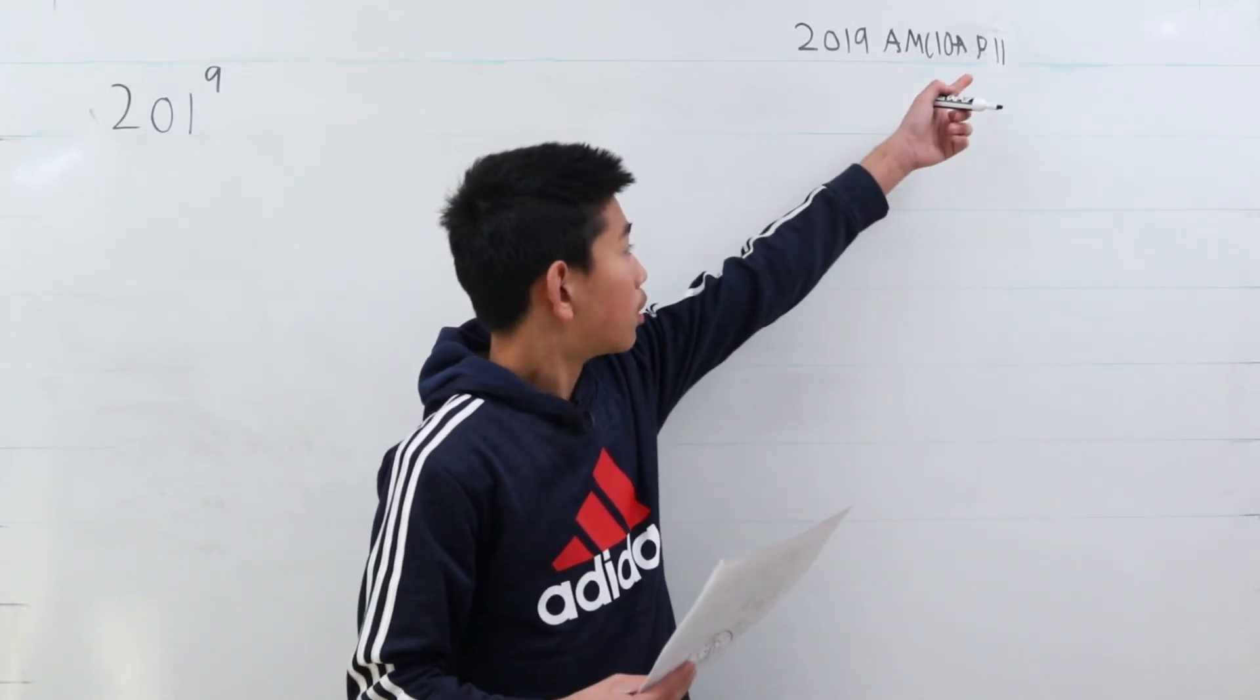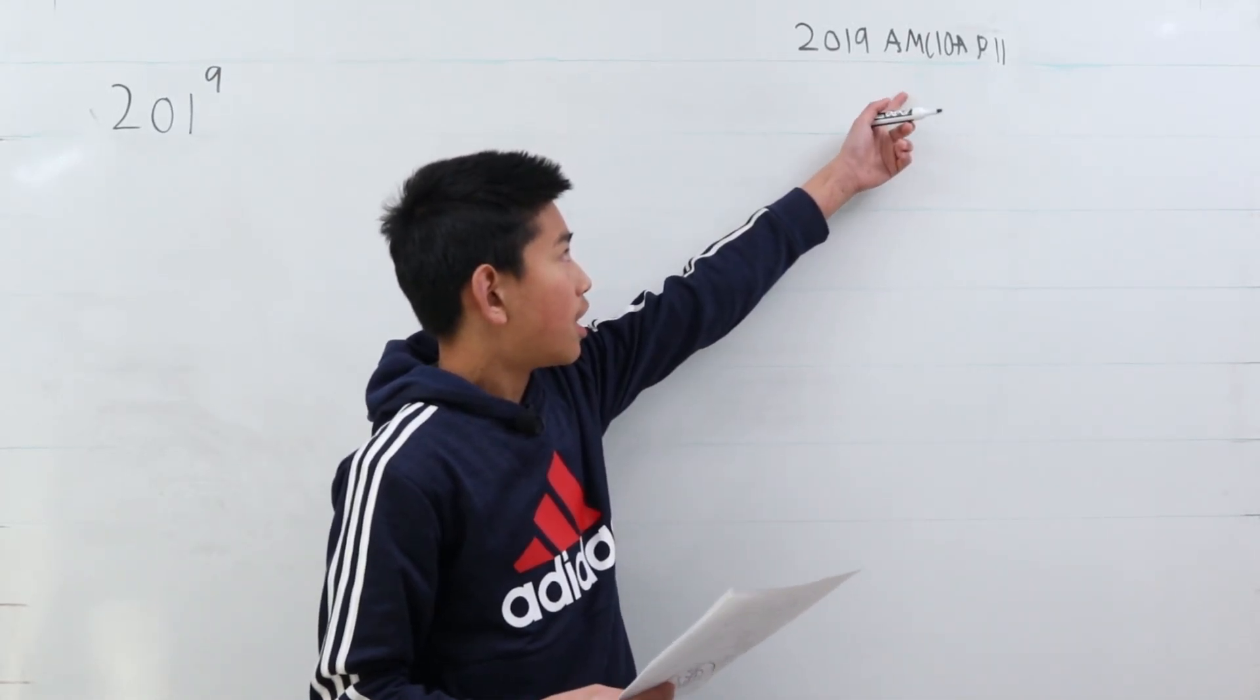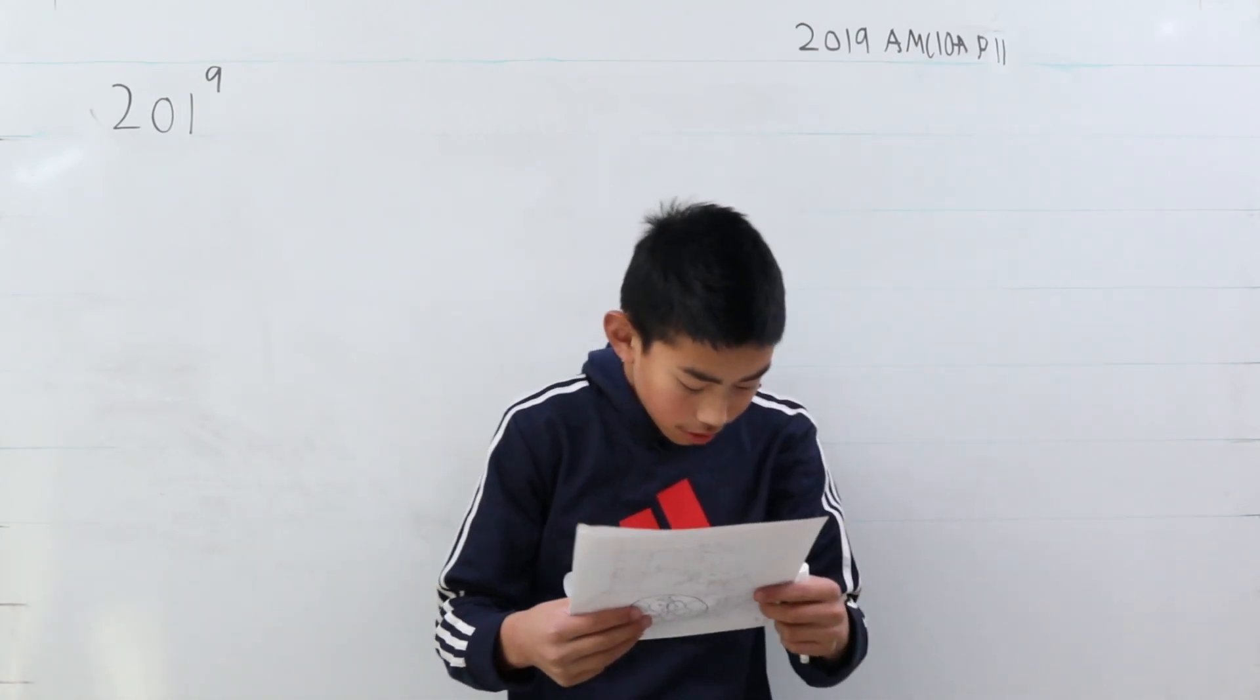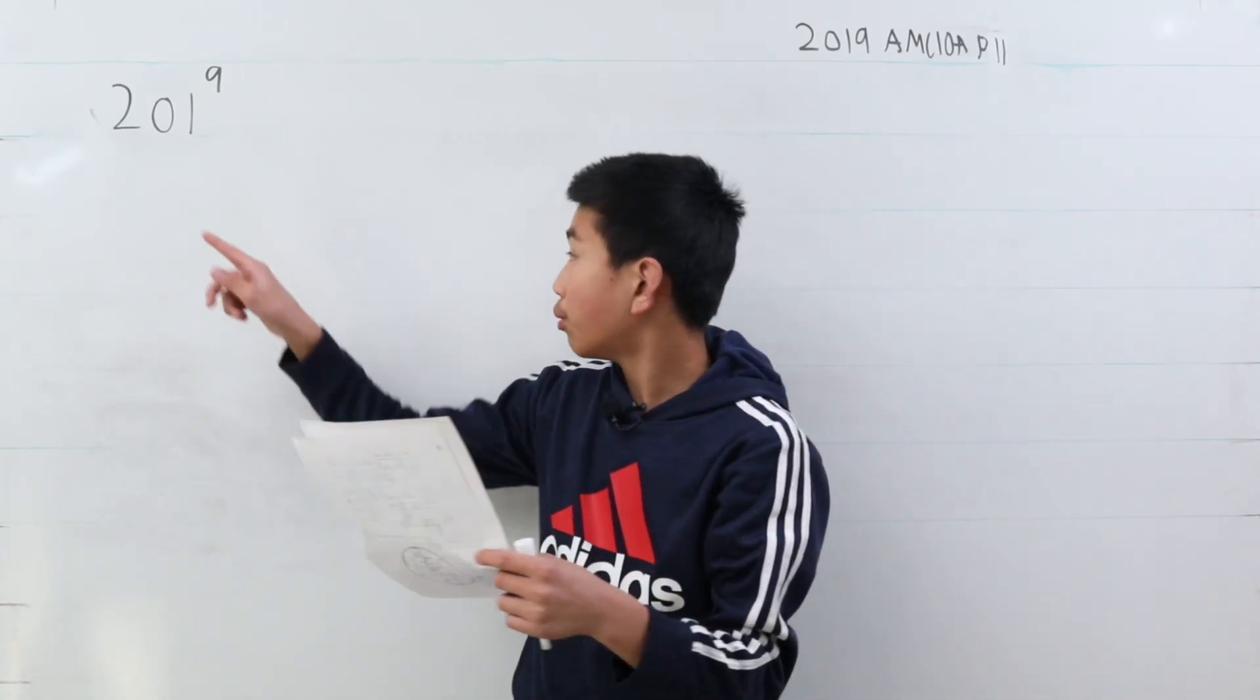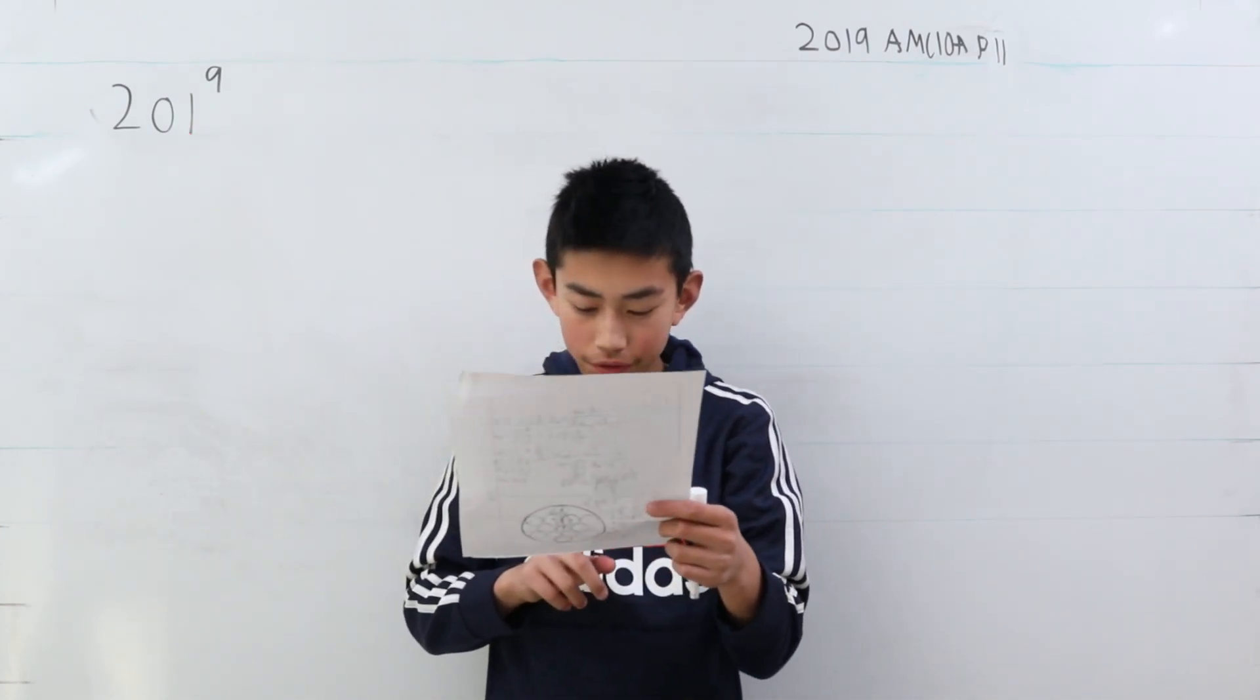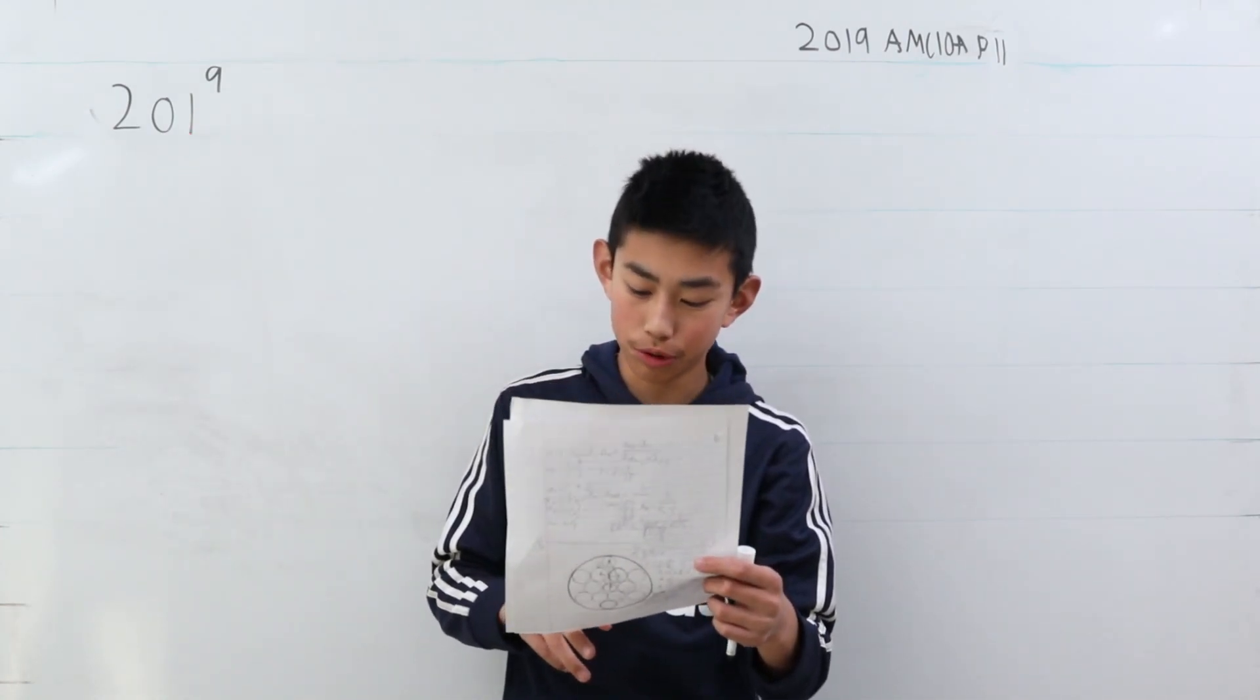We are now solving problem 11 from the AMC 10A from 2019. How many positive integer divisors of 201 to the power of 9 are perfect squares or perfect cubes, or both?